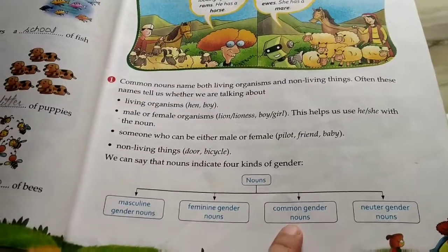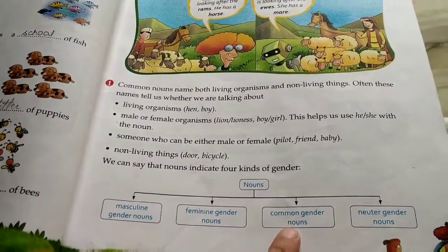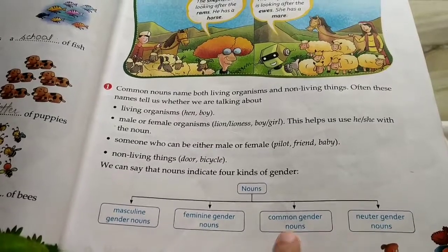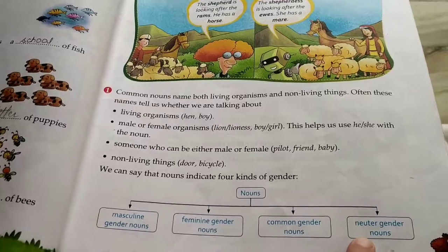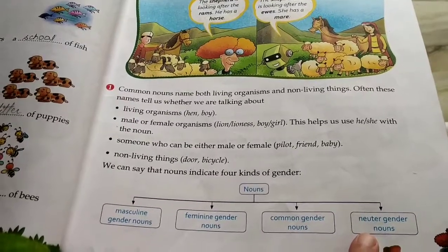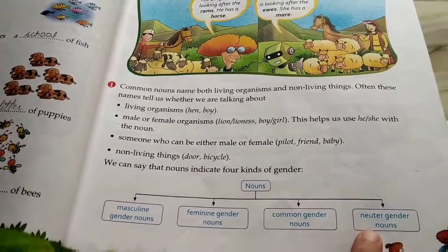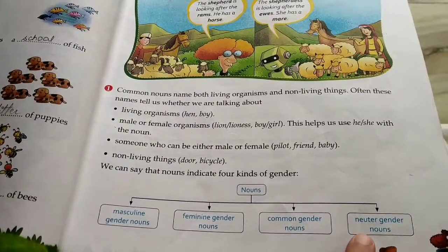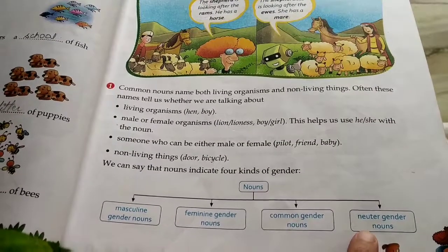Common gender nouns are nouns that are used for both males and females. Neuter gender nouns denote a lifeless thing and are neither male nor female. For example: pan, pencil, ball, bag, etc.